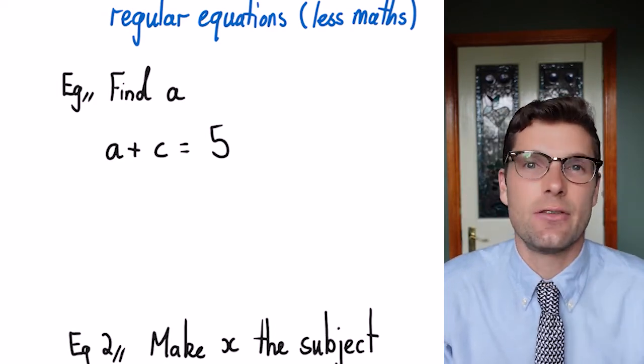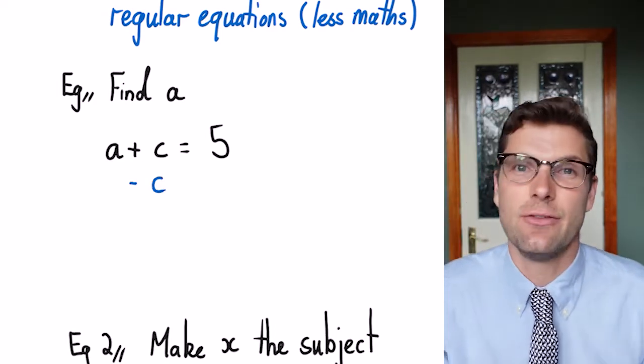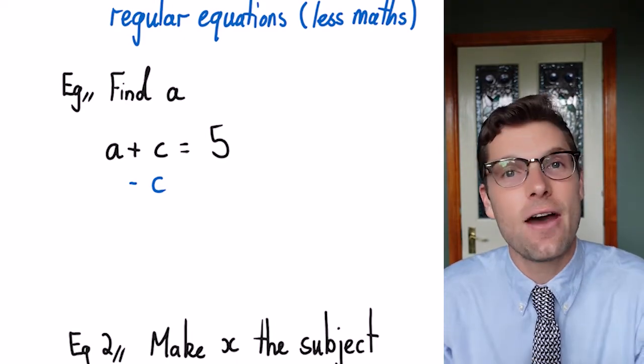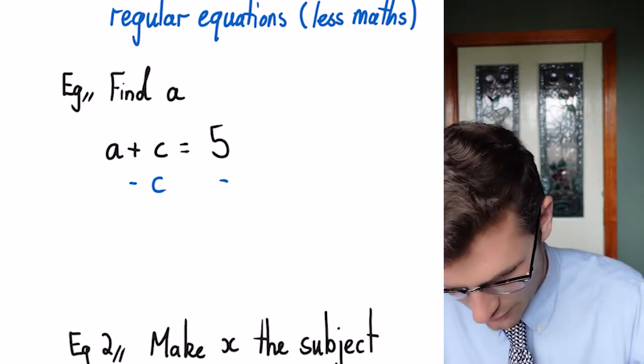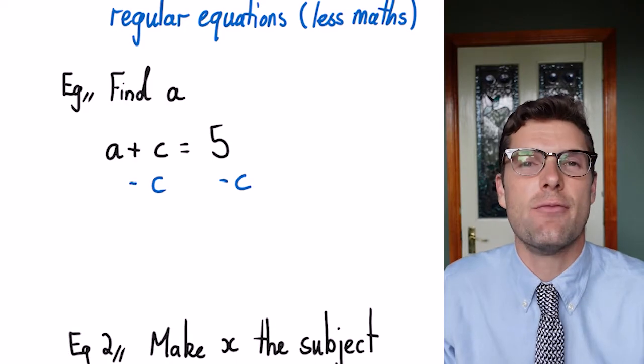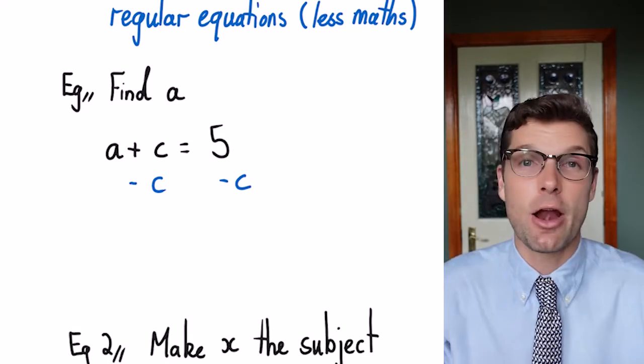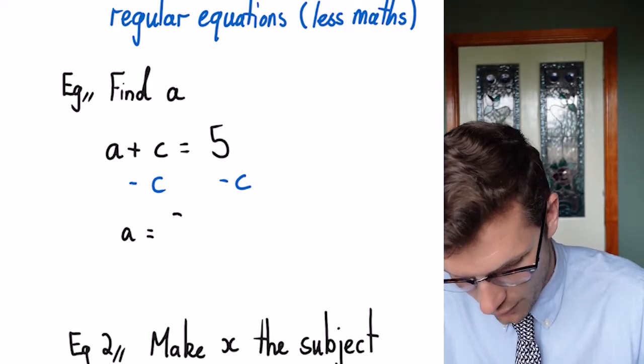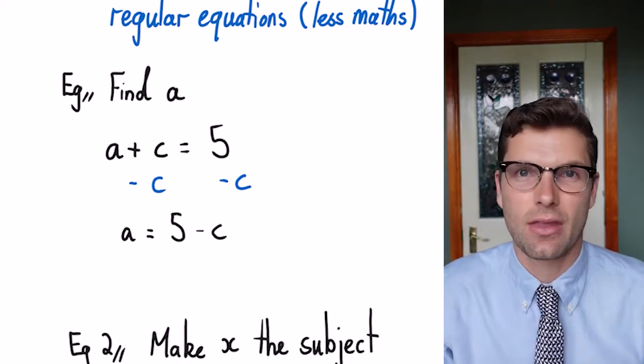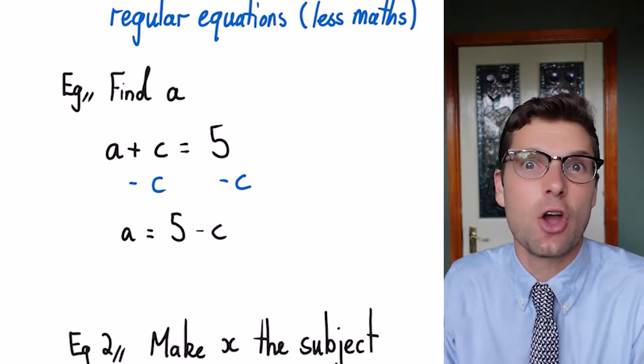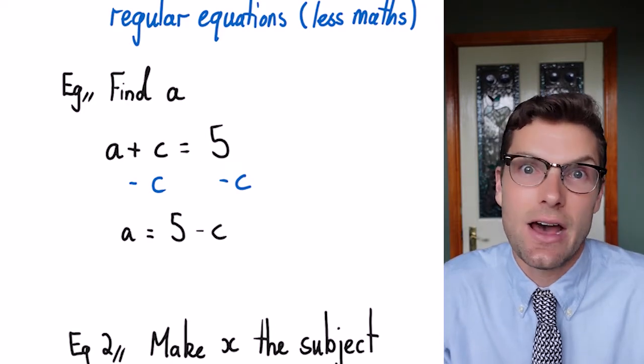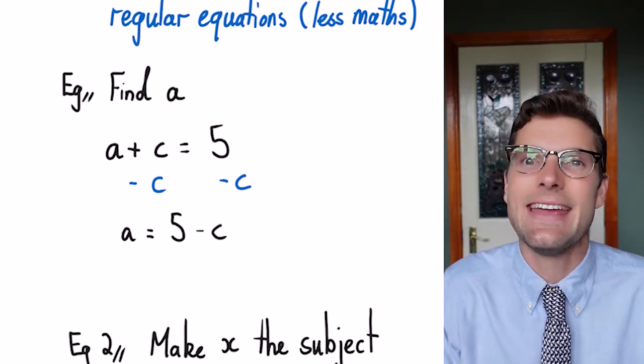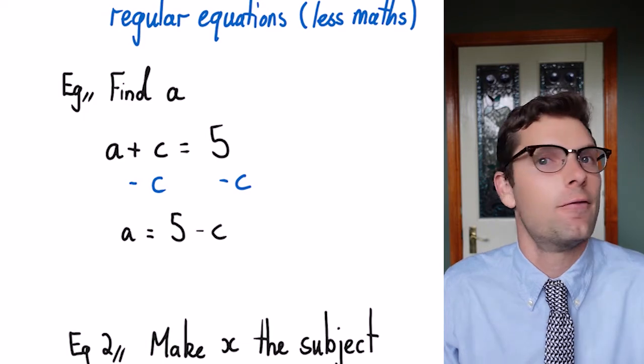So instead of plus c, I need to minus c from my a side and I've got to do that on the other side as well. So both sides have minus c. Then when I rewrite out my equation, I've got a is equal to five minus c. In this line of working, I've got a by itself, so I'm done. The value of a in this question is five minus c.